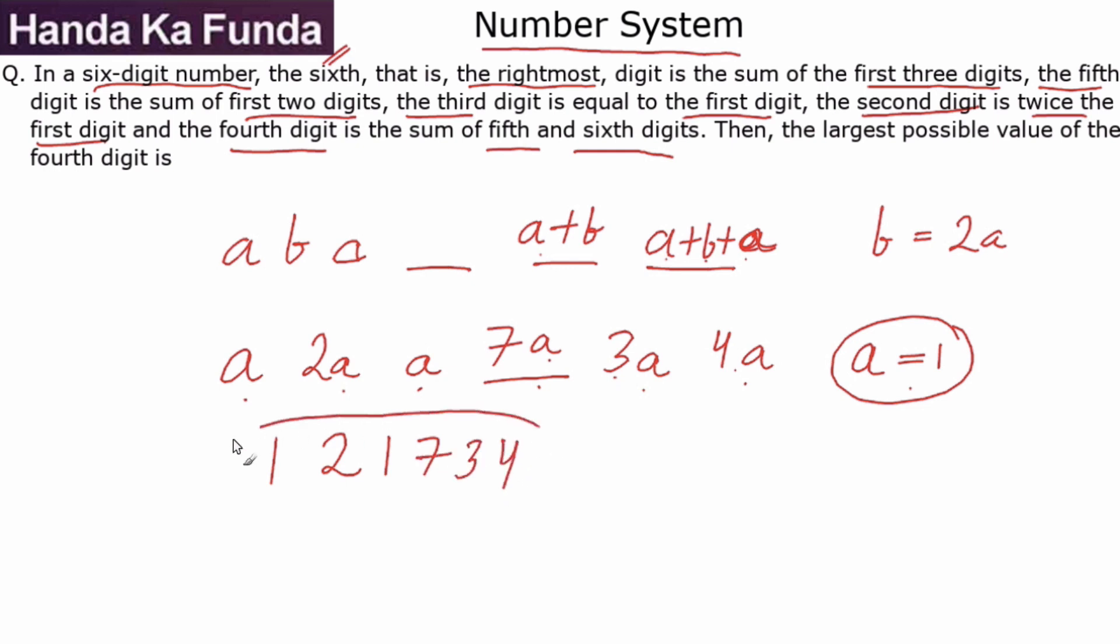This is my six-digit number. The question that is being asked is largest possible value of the fourth digit. Well, the only possible value for the fourth digit is the largest possible value, which is 7. Straightforward question, should have been attempted in the exam.